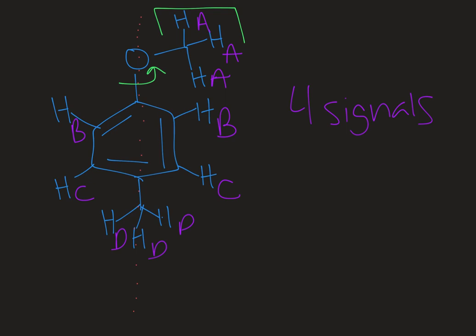Those are some examples of how you can determine the number of signals in your proton NMR by labeling all of the unique types of protons on your molecule. I have a bunch more videos on proton NMR, so check them out if you need some more help. Spectroscopy is awesome, it's so fun, but it's definitely a puzzle and takes some practice. If you found this video helpful, please like, subscribe and share with your friends. I'll see you next time. Thanks.